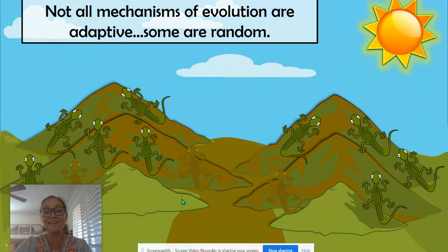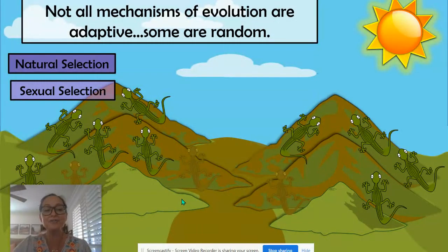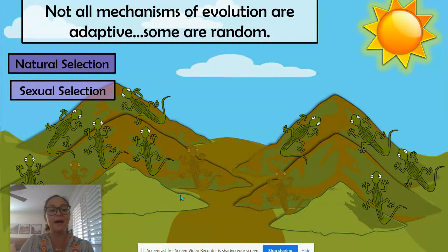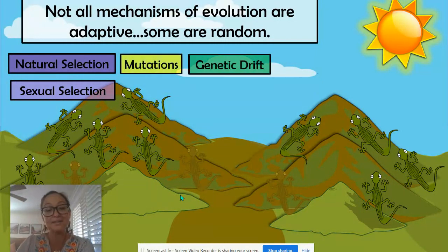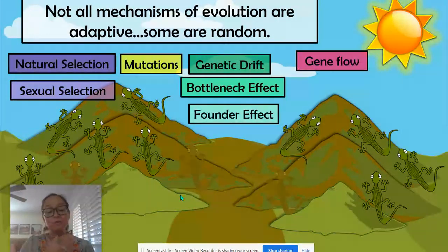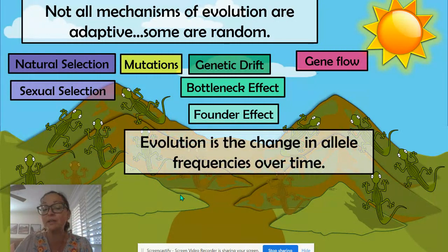To summarize: not all mechanisms of evolution are adaptive. While natural selection and sexual selection are adaptive evolution — there are traits that confer high fitness — we also have random ways that populations evolve, where allele frequencies change over time randomly. Those would be mutations that randomly occur, genetic drift made up of the bottleneck effect and the founder effect, and then gene flow or migration. Those three will change allele frequencies over time or over generations through random events, not adaptive ones. That is it on population genetics, and this will set the stage for our discussion on Hardy-Weinberg and how we can mathematically calculate whether or not a population is evolving.